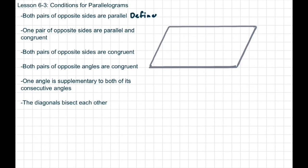The next one says both pairs of opposite sides are congruent. So that means that when they gave me the parallelogram, I would have to see tick marks showing that the opposite sides are congruent to each other.